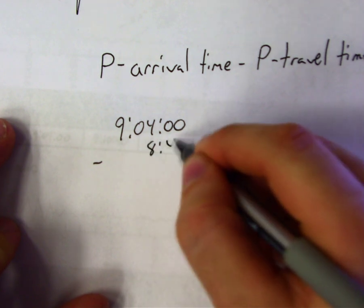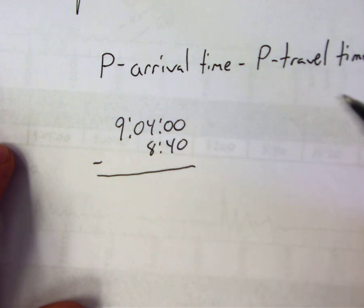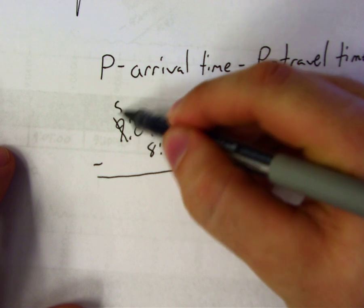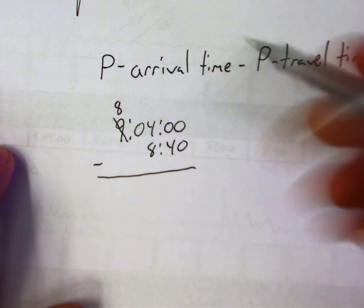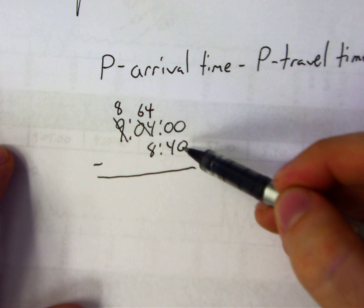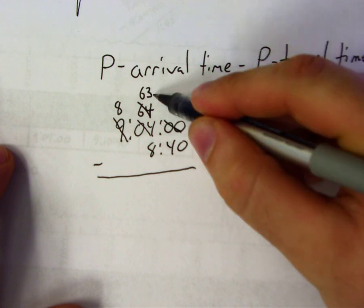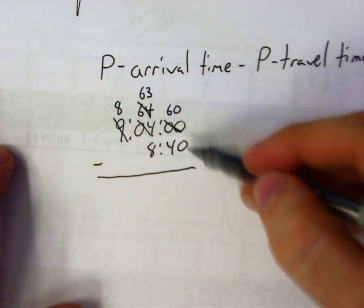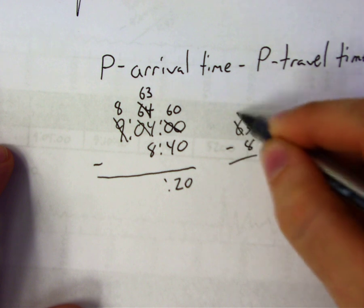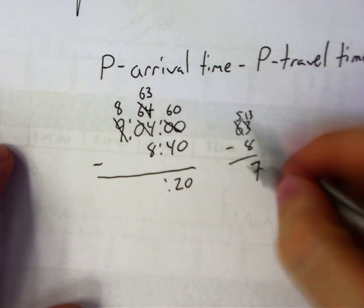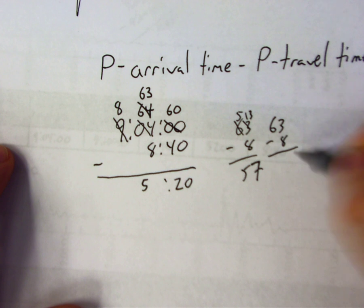This subtraction requires borrowing. You can't take 40 from 0, and you can't take 8 from 4, so you borrow from the hours column: the 9 becomes an 8, and you add 60 minutes, giving 64 minutes. Then you can't take 40 from 0 seconds, so borrow a minute: 64 becomes 63, and you get 60 seconds. 60 minus 40 is 20; 63 minus 8 is 55 — giving an origin time of 8:55:20. My math skills are terrible, sorry!